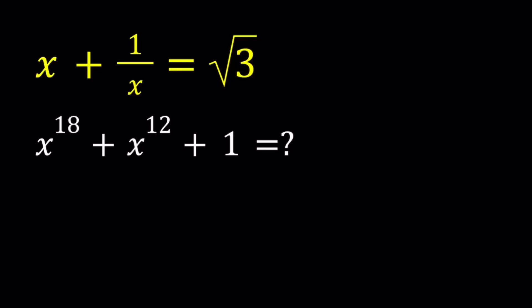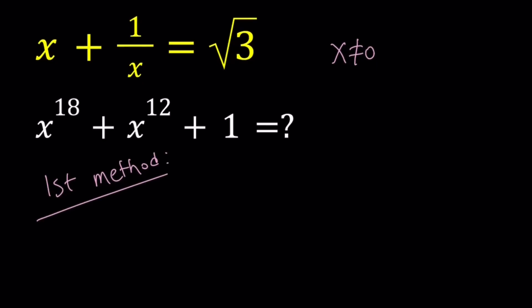So I'll be presenting two methods, and here's the first one. For my first method, I'll multiply both sides by x. Obviously, x does not equal 0, so I can easily multiply both sides by x without hurting the equation.